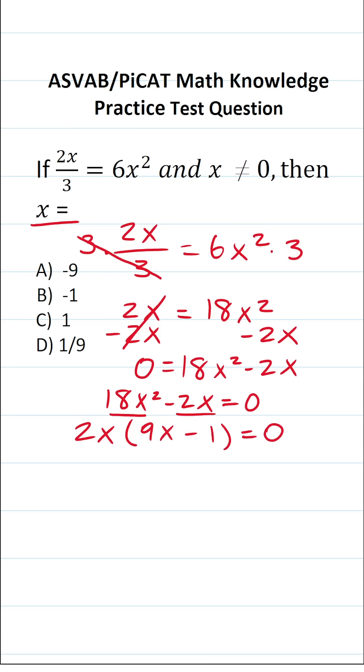Now that we have this set equal to zero what we're going to do is set each of these to zero independently. That is to say we're going to set 2x equal to zero and solve for x and we're going to set 9x minus 1 equal to zero and solve for x.